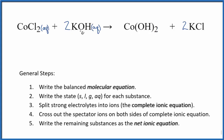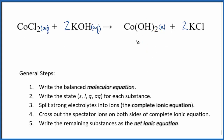Things like potassium hydroxide and sodium hydroxide — these group 1 hydroxides — are soluble, but most of the other ones are either slightly soluble or insoluble. So cobalt 2 hydroxide will be a solid; when these two react, this will be a precipitate — it'll fall to the bottom of the test tube. We write S. Chlorides are very soluble, so aqueous.